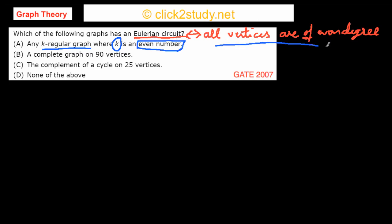From our theorem, if all vertices are of even degree, then there is an Eulerian circuit. In a k-regular graph, all vertices have the same degree k, and since k is even, this graph has an Eulerian circuit. So option A looks correct.